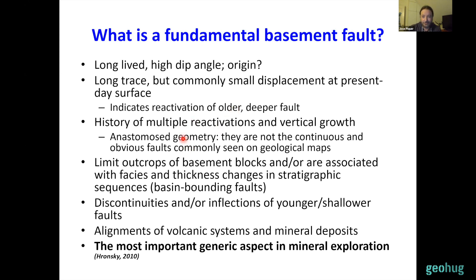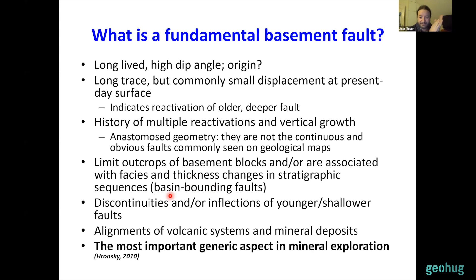Commonly what we see at the surface in places like the Andes, where thousands of volcanic and sedimentary units have accumulated on top of the basement rocks, is an anastomal geometry — several individual small-scale faults which are not the obvious, continuous faults commonly shown on geological maps. In many cases they are not present on geological maps at all. When we have outcrops of basement rocks — Proterozoic or Paleozoic rocks cropping out in the Andes — they are commonly bounded by these fundamental basement faults, which control the uplift of these basement blocks.